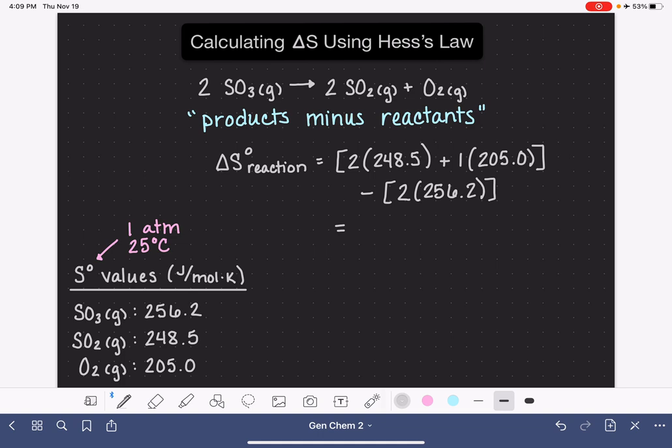The units are joules per mole times Kelvin. I got those units from my data table right here. And let's think for a minute if this number makes sense. We came out with a positive value of entropy, meaning that for this particular chemical reaction, the entropy of the system increased. Does that make sense with what we know about change in entropy and predicting the sign?